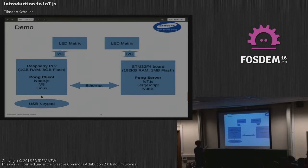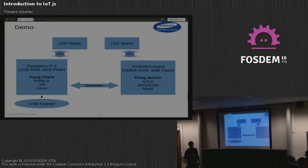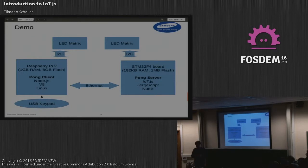The underlying stack on each device is quite different. On the Raspberry Pi, we have quite a lot of resources: one gigabyte of RAM, eight gigabytes of flash, so we can use the traditional Linux/V8/Node.js stack. But on the STM board we are much more limited — it hosts a Cortex M4 microcontroller with just 192 kilobytes of RAM and one megabyte of flash. The stack there is JerryScript with IOT.js on top, all hosted on NuttX, which is an open source real-time operating system that provides the networking stack. The entire stack fits within one megabyte of flash.